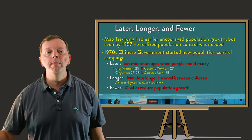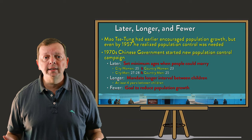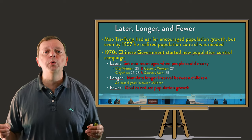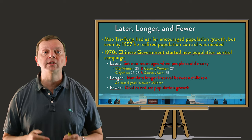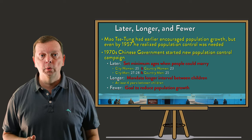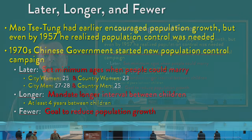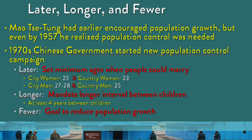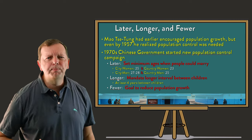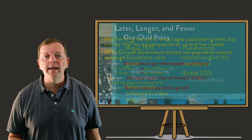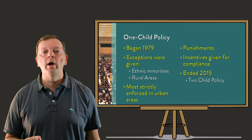One of the teachings of Mao was that the people of China were the strength of the country — therefore, having more people meant more strength. However, by the 1970s, the Chinese government realized that its population was becoming a liability and set out on its first population control program known as Later, Longer, and Fewer. It figured that by mandating people wait later in life to marry and lengthen the gap between children, you would have a lower growth rate. While this did begin to lower the growth rate, in 1979 the Chinese instituted the One Child Policy.